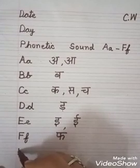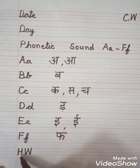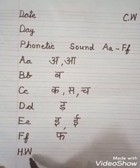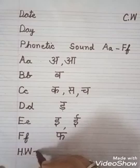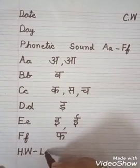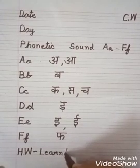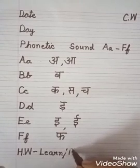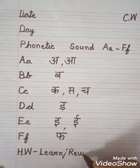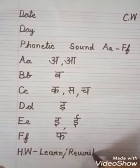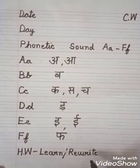Now here, last line. Write down H, W. H, W means H for home, W for work — home work. Then write down learn: L, E, A, R, N — learn, slash. Then write down rewrite: R, E, W, R, I, T, E — learn and rewrite.